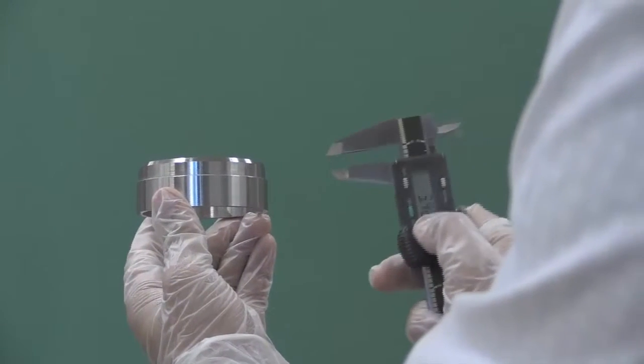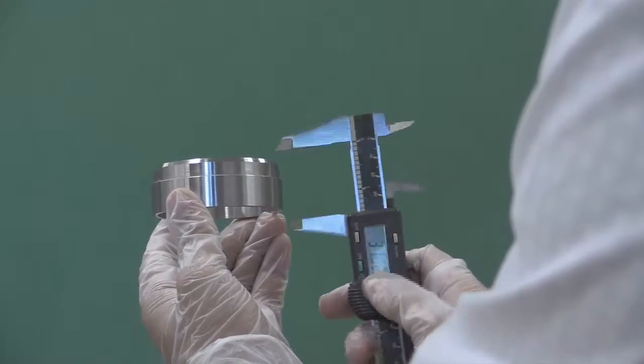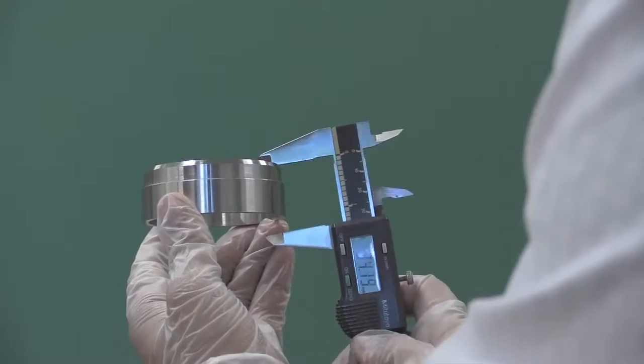In the same way, measure the height of the odometer ring. These measurements will be used to calculate the initial volume of the specimen.